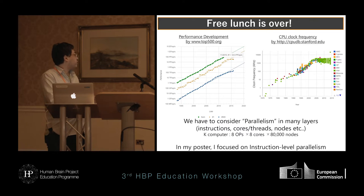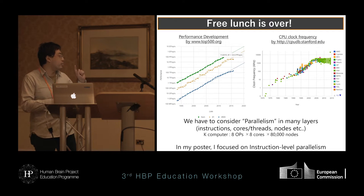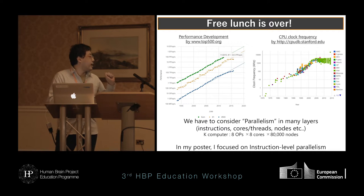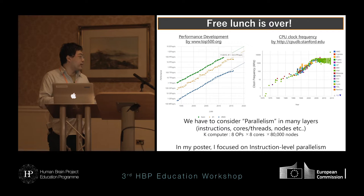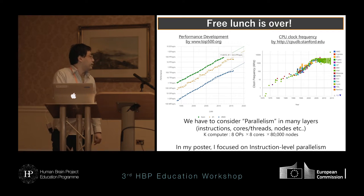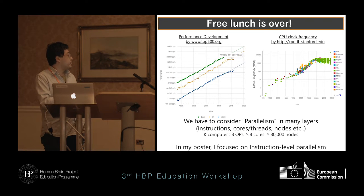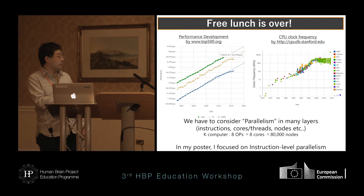For example, K-computer can accumulate eight operations at one clock with one core. K-computer's CPU has eight cores in one chip, and K-computer has 80,000 chips in that system.